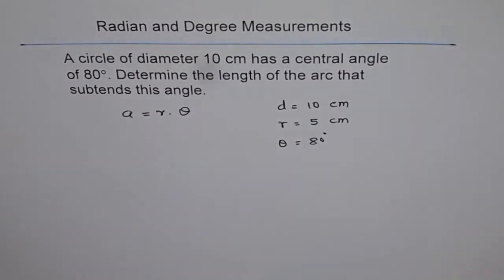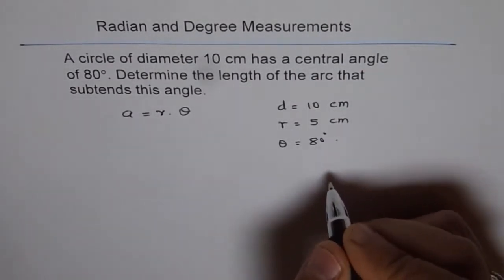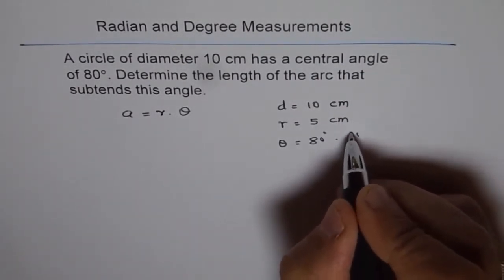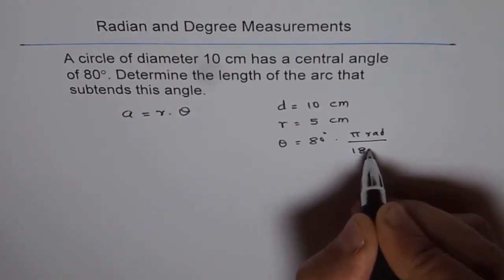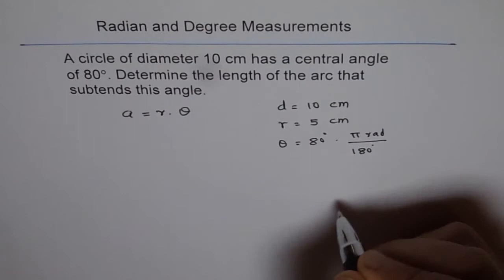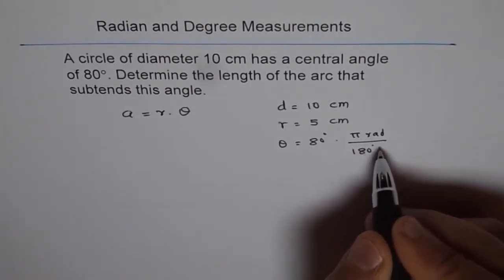We need to convert 80 degrees to radians. How to do it? To convert it to radians, we multiply by pi radians and divide by 180 degrees. So that is our conversion of 80 degrees into radians.